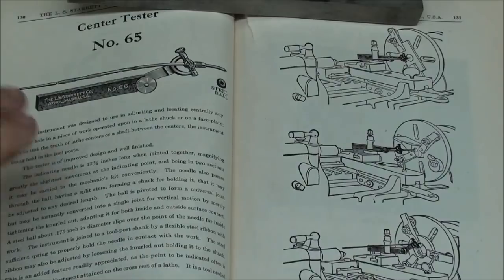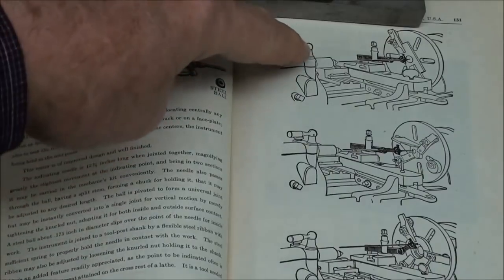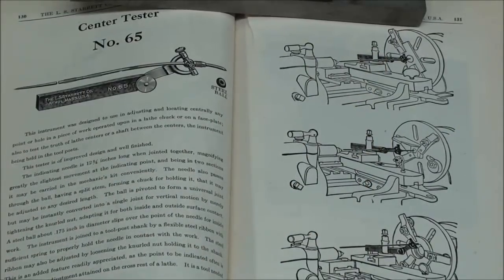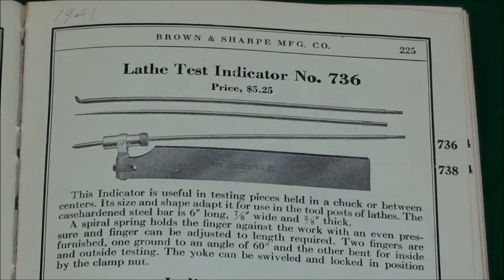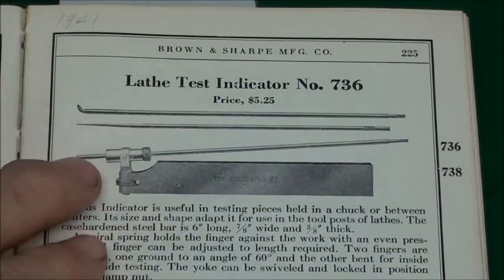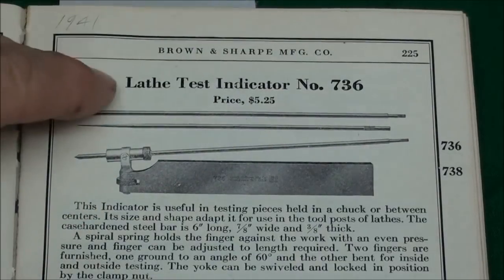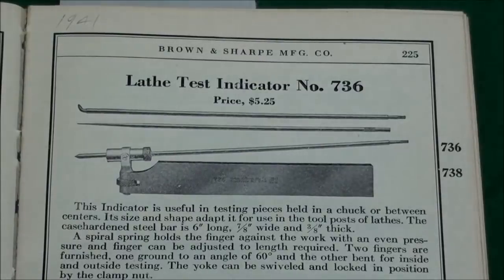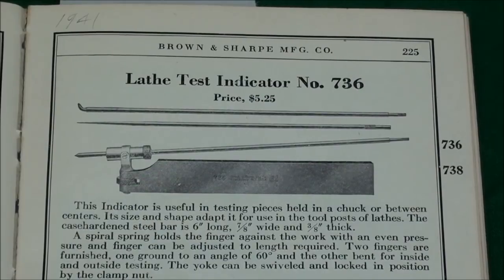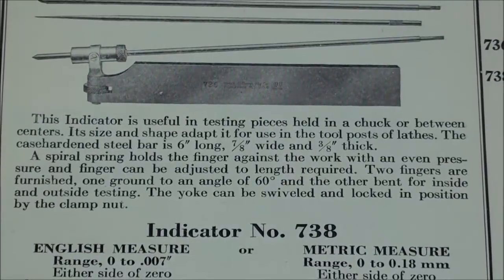This is a couple pages out of the 1938 Starrett catalog, and there's a description of the tool. Here's some examples of how it is to be used, and I'll show you that on the lathe just very briefly. The Starrett tool in the last picture was four dollars and seventy-five cents. This is the 1941 Brown and Sharp tool catalog, and they call it the 736 lathe test indicator, and that was five dollars and twenty-five cents. But I suppose that was a lot of money at the time when people were earning less than a dollar an hour.